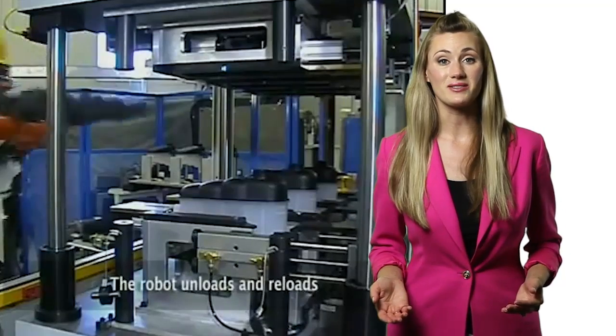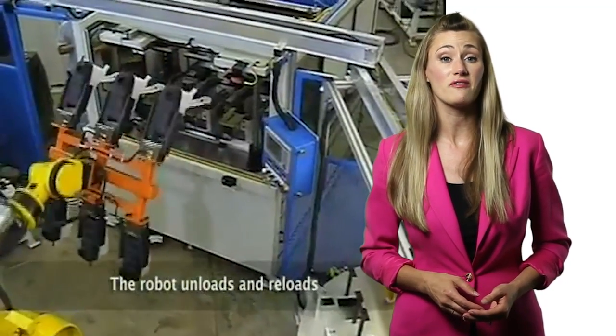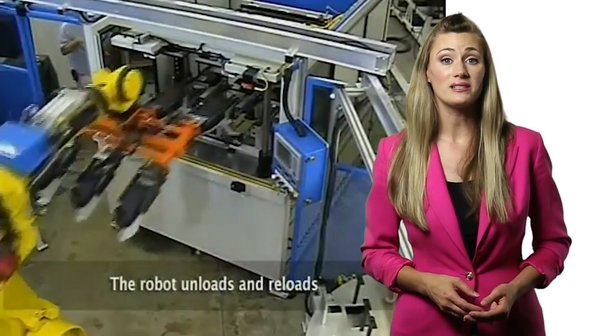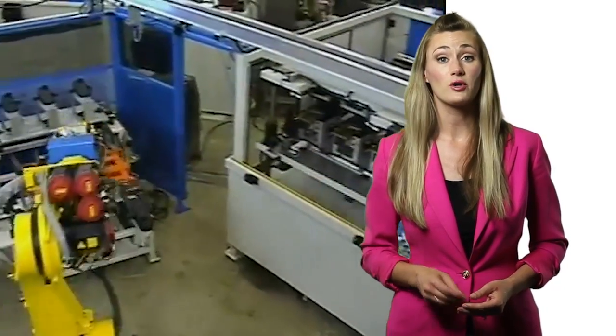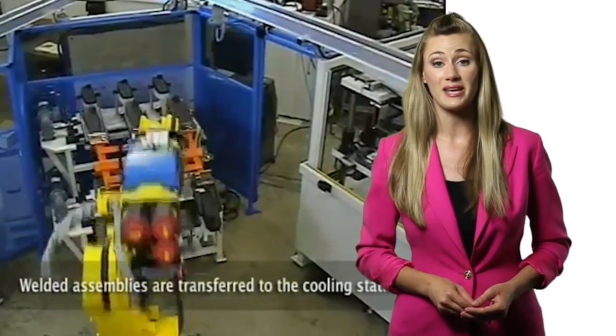To minimize the cycle time, JR Automation engineers used what they knew about the fixed times needed to weld and cool each reservoir. From there, they began designing the movement of the robotic arm, creating what looks like a type of mechanical ballet.